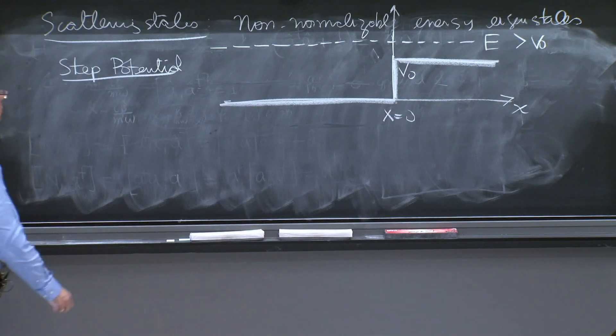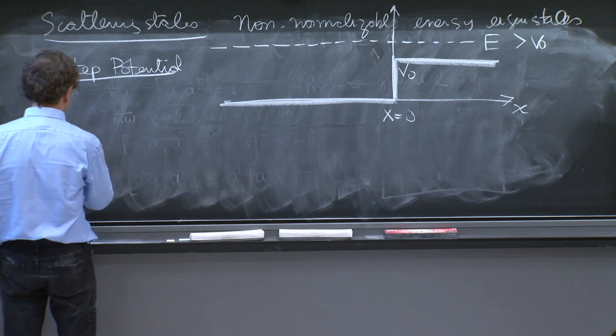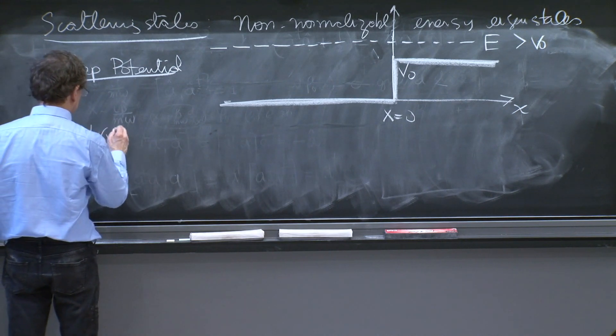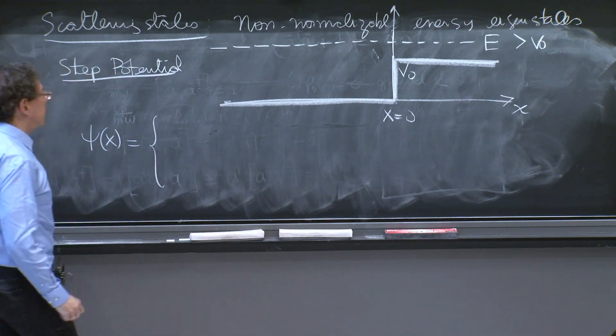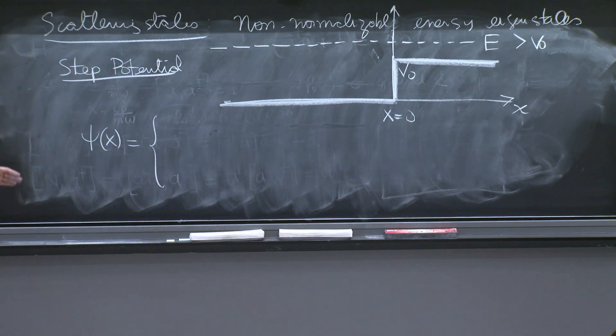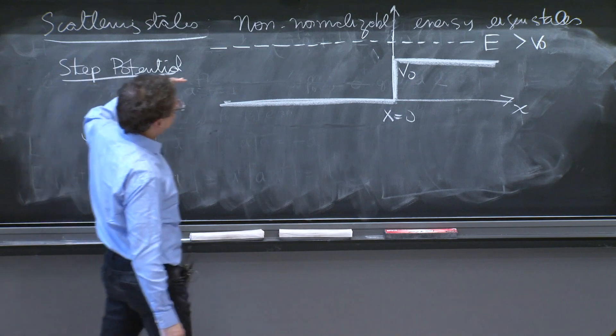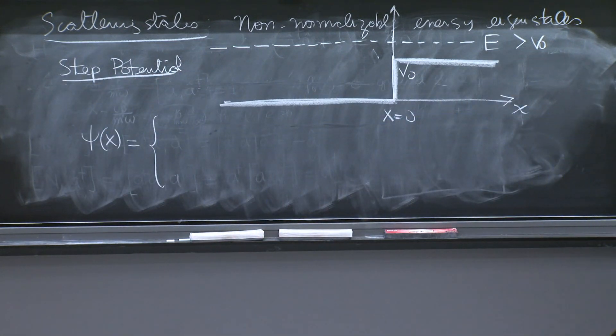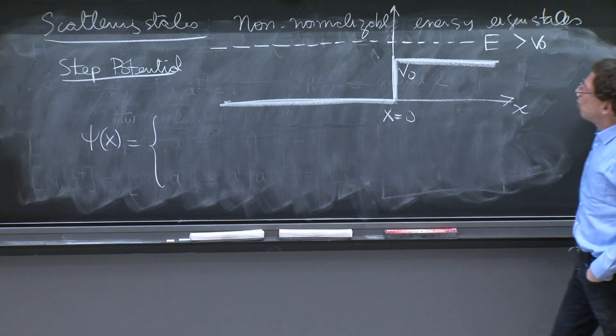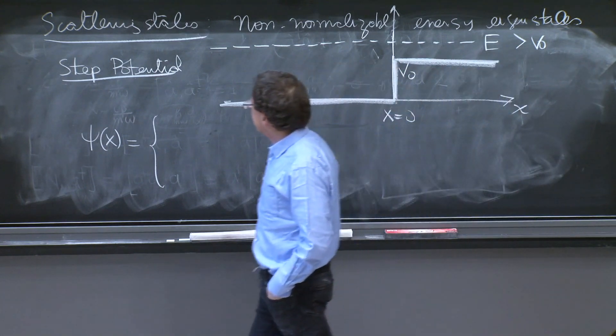So how do we write the solution for the energy eigenstate? It's a psi of x. Well, I should write two formulas, a formula for what's happening on the left side, and a formula for what's happening on the right side. Now, I have a choice, actually, here. There's two ways of visualizing this. I can visualize it as a wave that is coming from the left, moving here,